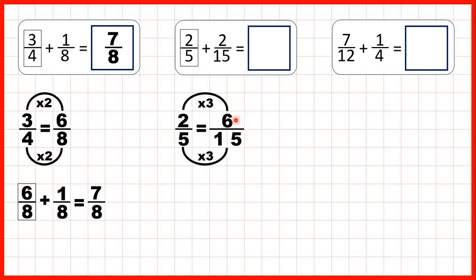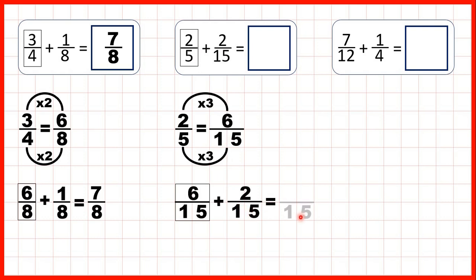So now we can rewrite our question. Instead of two fifths we write six fifteenths, because that's equivalent to two fifths. We're adding two fifteenths, so the denominator stays the same in our answer, and six plus two is eight. So our answer is eight fifteenths.